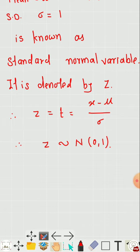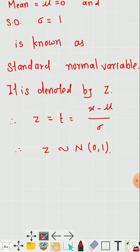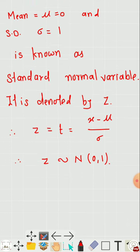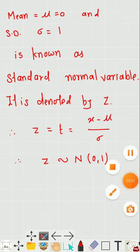The standard normal variable has mean zero and standard deviation equal to 1, and the area under the standard normal variable is taken as unity. We will see how to find these areas under the curve in the next lecture. Thank you for paying attention.